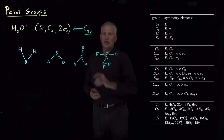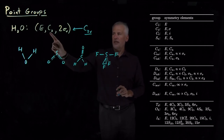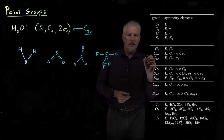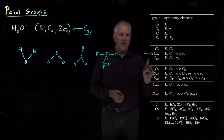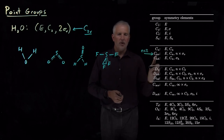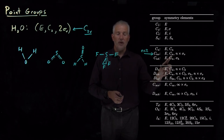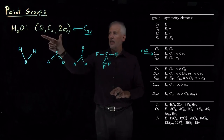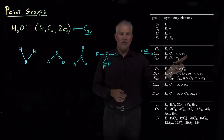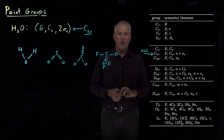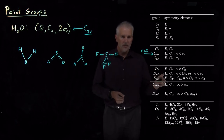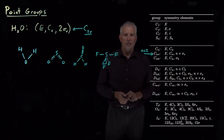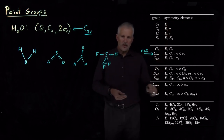One column lists the point groups and next to it are the corresponding symmetry elements. We know water is in the C2V point group with E, C2, and two reflection planes. A molecule is in the CnV — or C2V when N equals 2 — point group if it has an identity, a Cn or C2 rotation axis, and N or two different σᵥ reflection planes. If we've determined the symmetry elements of water to be E, C2, and two σᵥ's, we've discovered it's in the C2V point group. Similarly, any other molecule's point group can be named from its symmetry elements using this table.